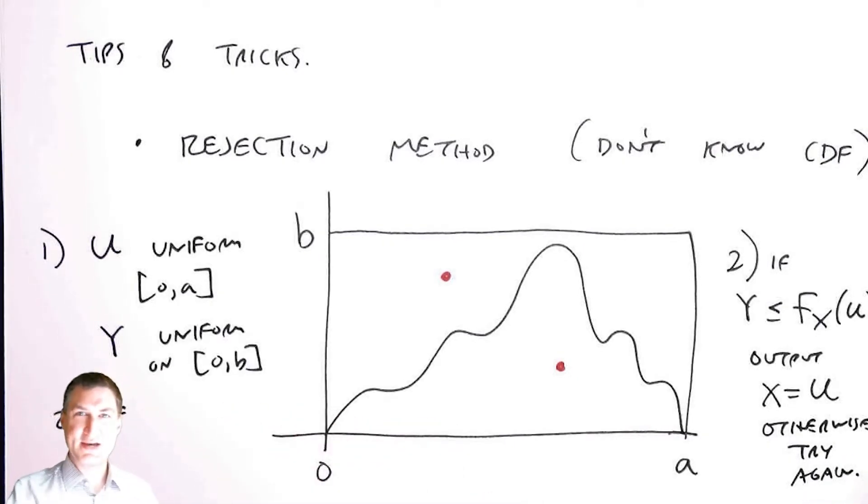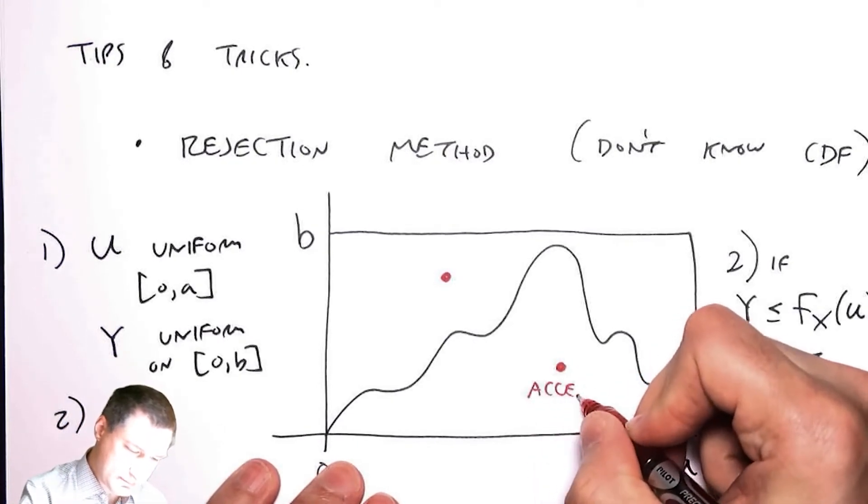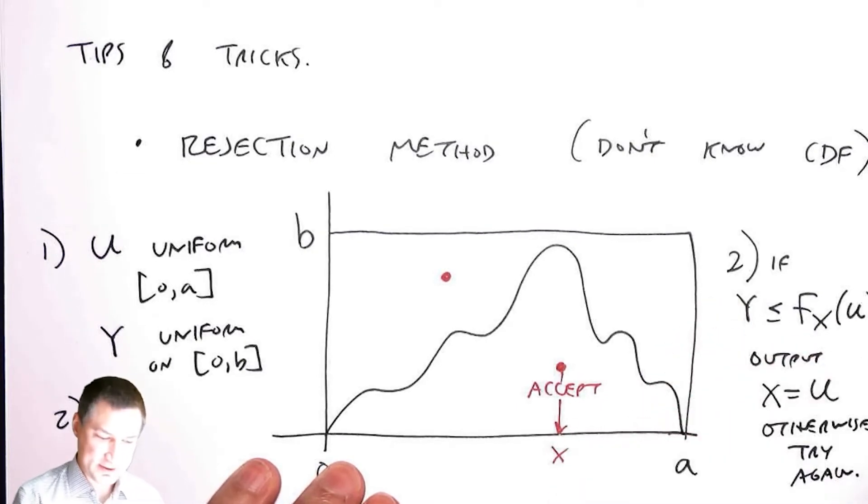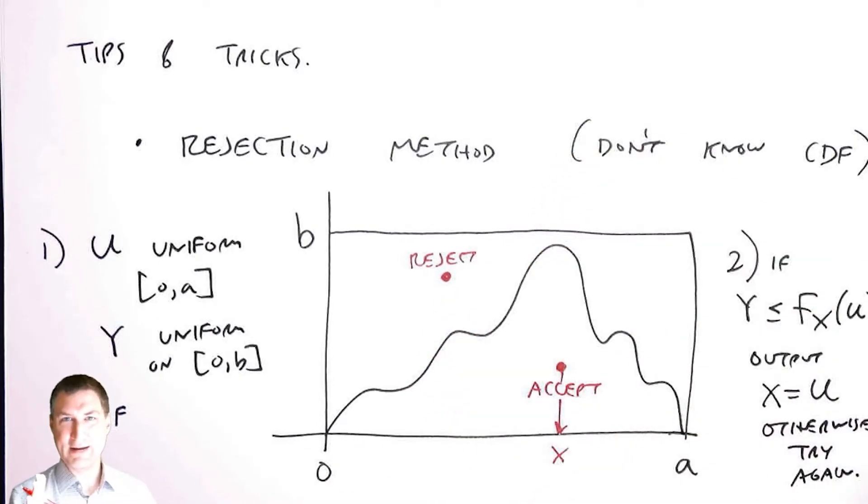It's a very simple method. It's basically saying keep on shooting darts at the board. If I get a dart that is under the PDF, then I accept it. Otherwise, if I shoot a dart and it's outside the range of the PDF, then I reject it.